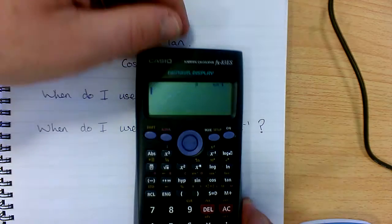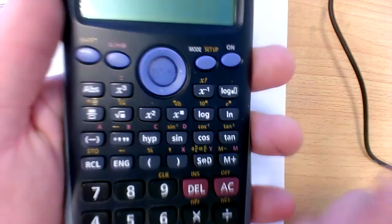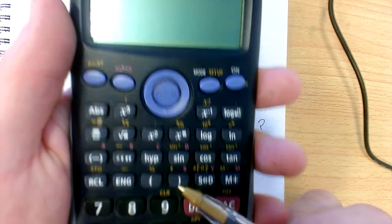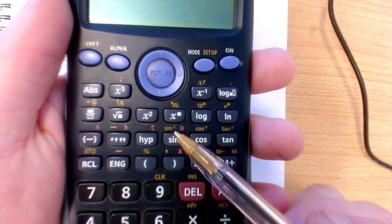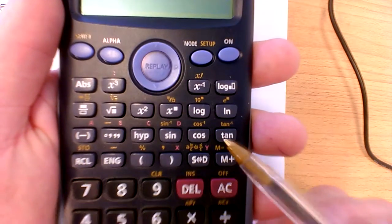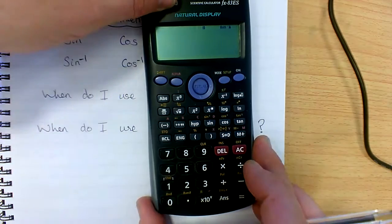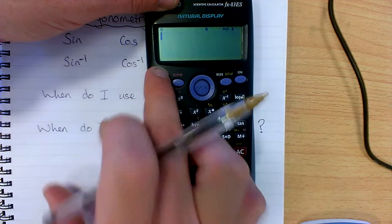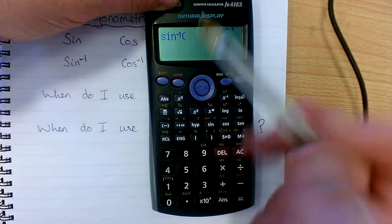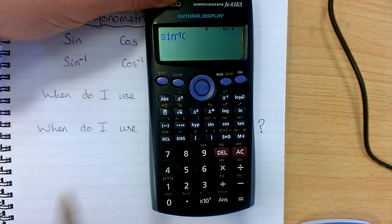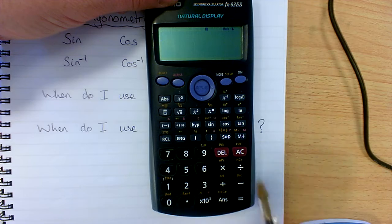Sin to the minus one, cos to the minus one, tan to the minus one. The minus one means they are the inverse operation. If you see in yellow, you can see them here. So to select the inverse operations, it would simply be shift, sin, and it comes up with sin to the minus one. Likewise for cos and tangent.